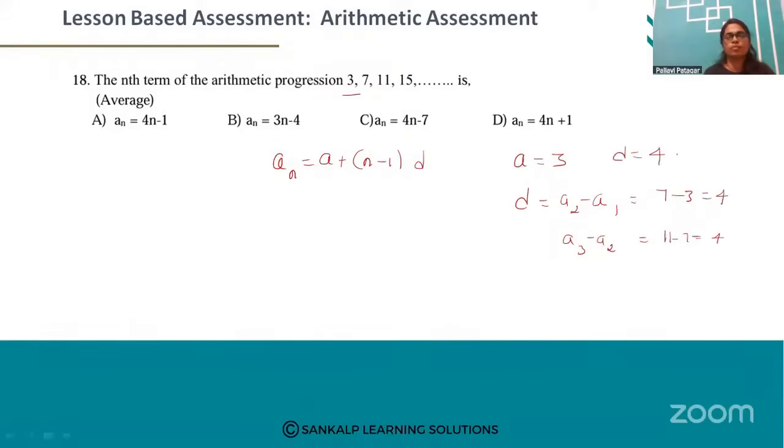is equal to 4. Now to find the nth term, a_n is equal to 3